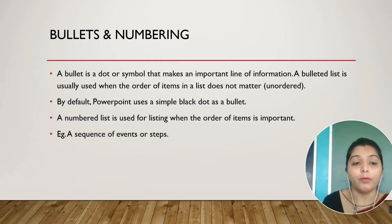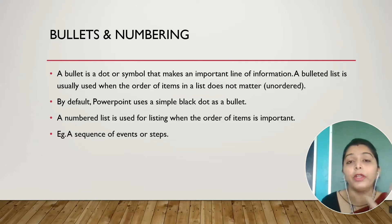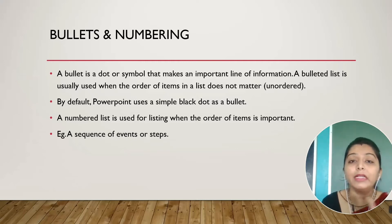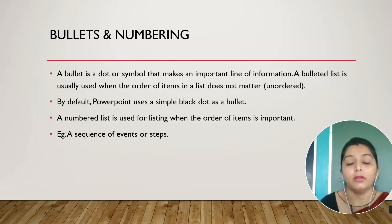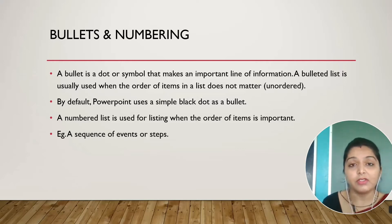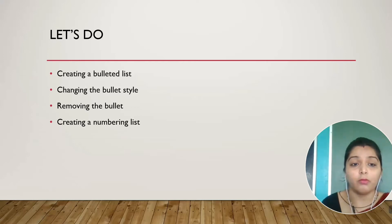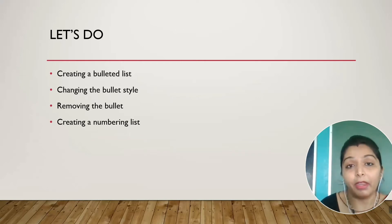Understood the difference between a bulleted list and a numbered list? A bulleted list is made for unordered items — it uses a dot or symbol. A numbered list is made so we can write items in a specific order, like steps. In the Word document, I will show you how to create a bullet list, how to change the bullet, how to remove the bullet, and how to create a numbering list.